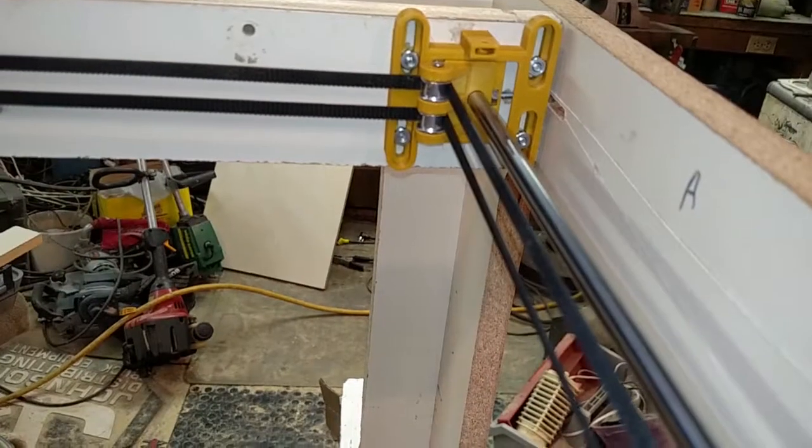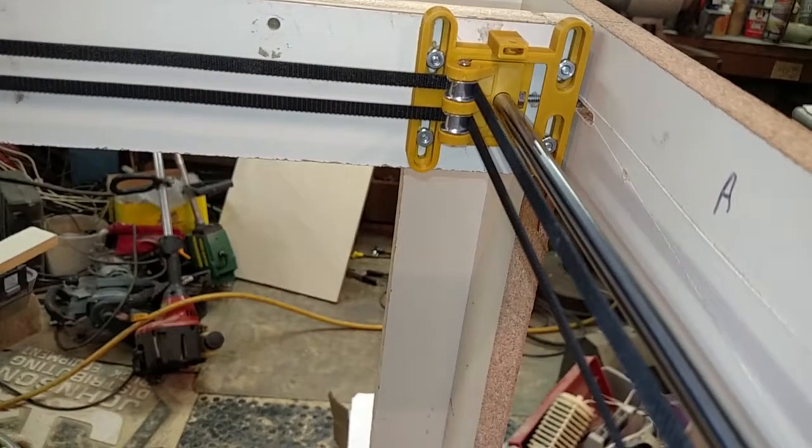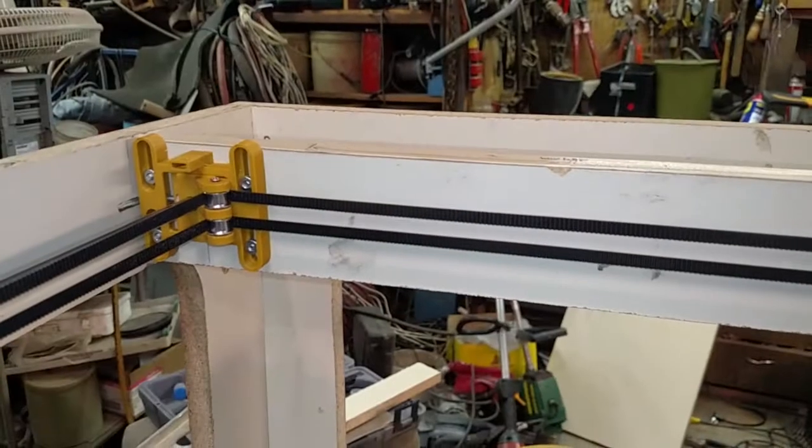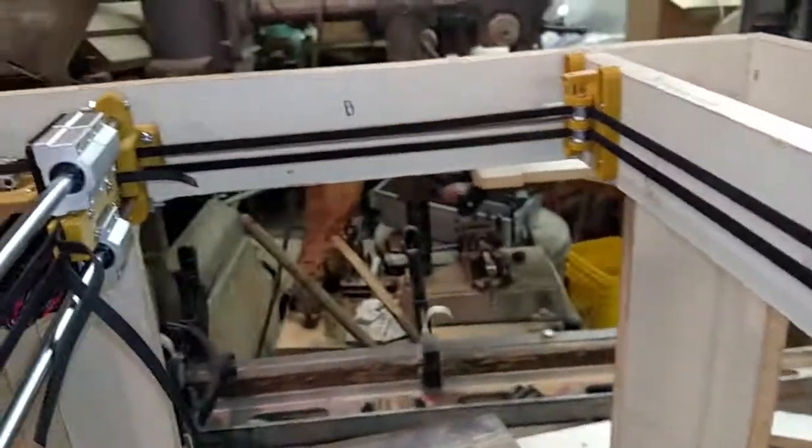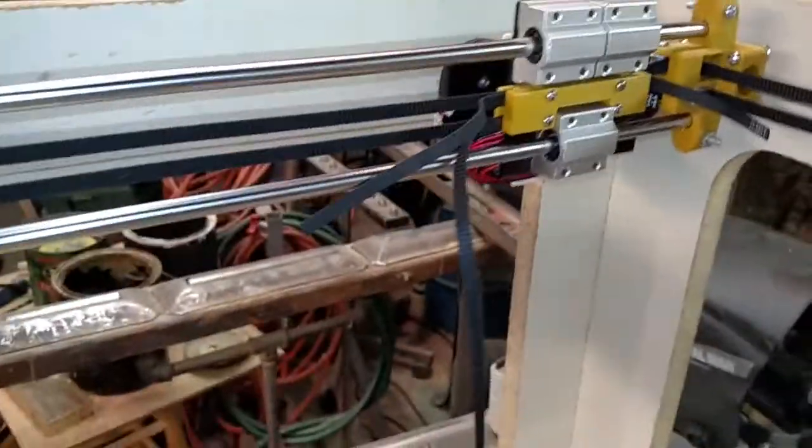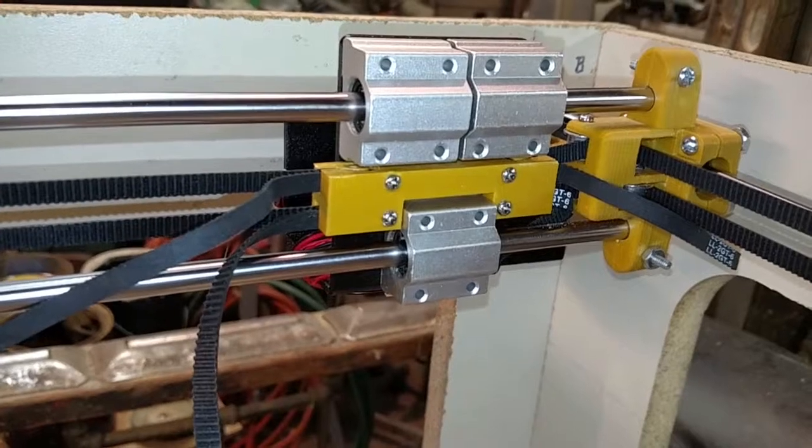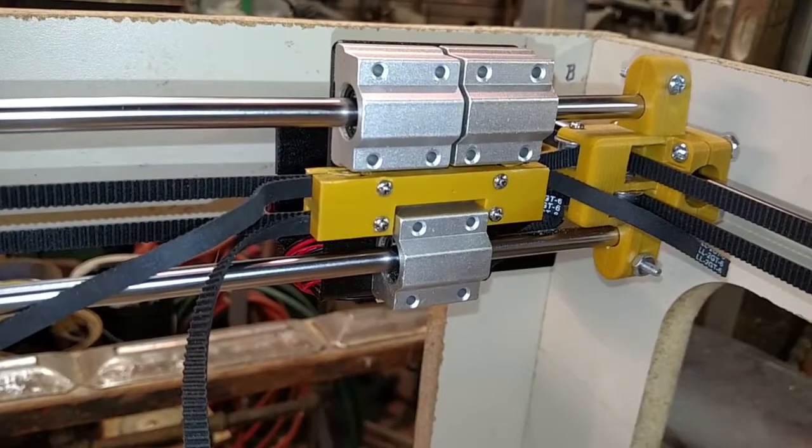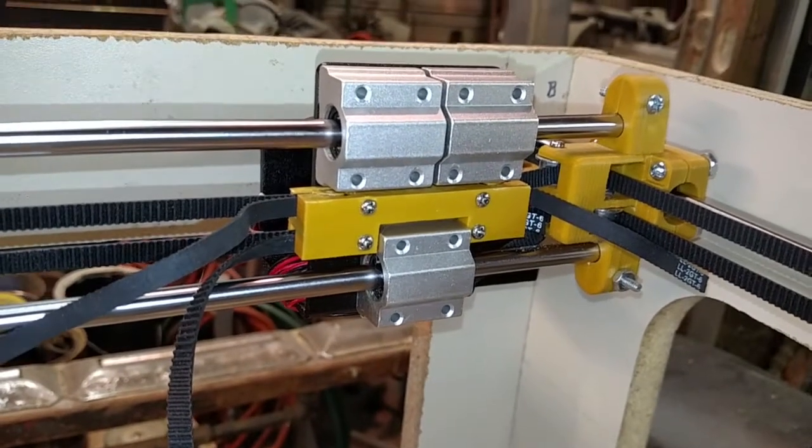We've got our X and Z squaring brackets all set up. We've got the belts on, as you can see, and the new belt retainer bracket design that fits the ANAT A8 carriage, hot-end carriage. Everything appears to be working at this point.